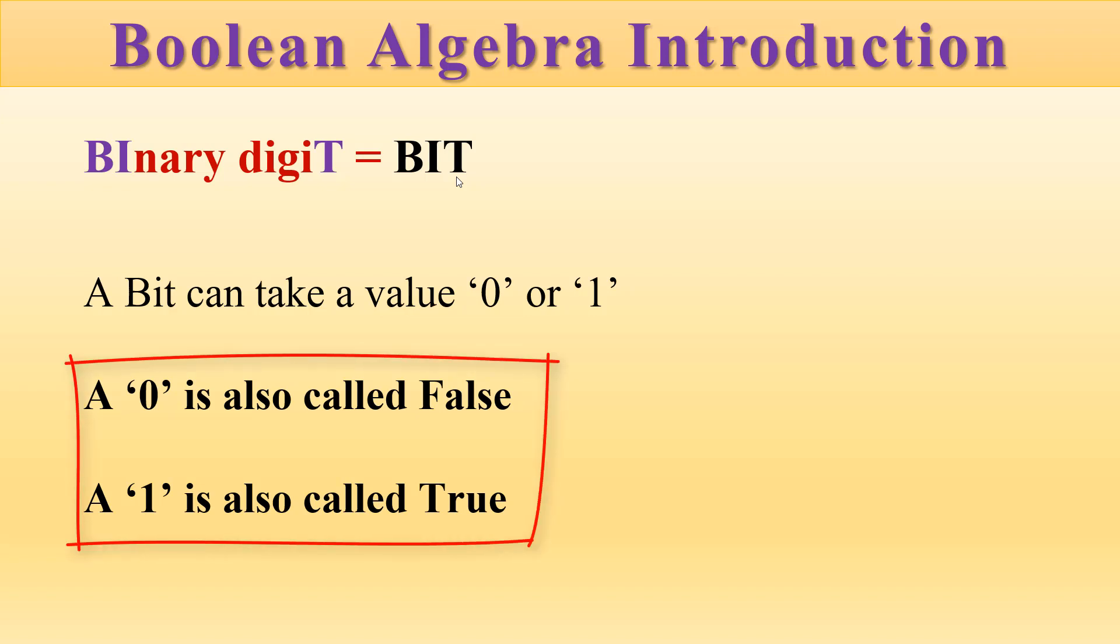Zero is also called false, and one is also called true. If I represent the bit as true, that means its state is one or five volts. If I represent it as false, then its state is zero or zero volts.